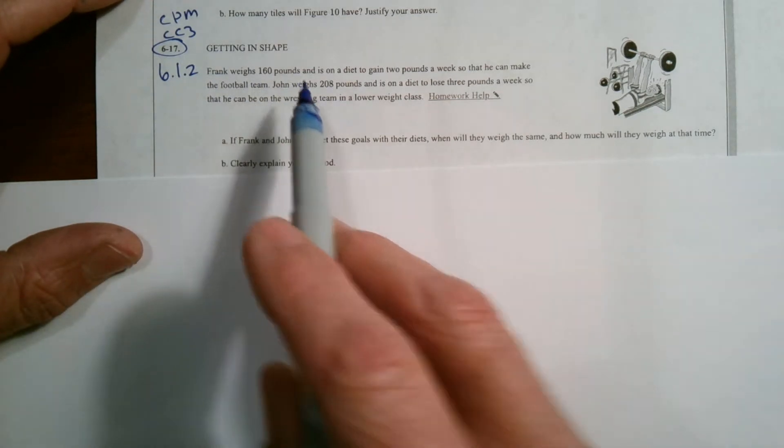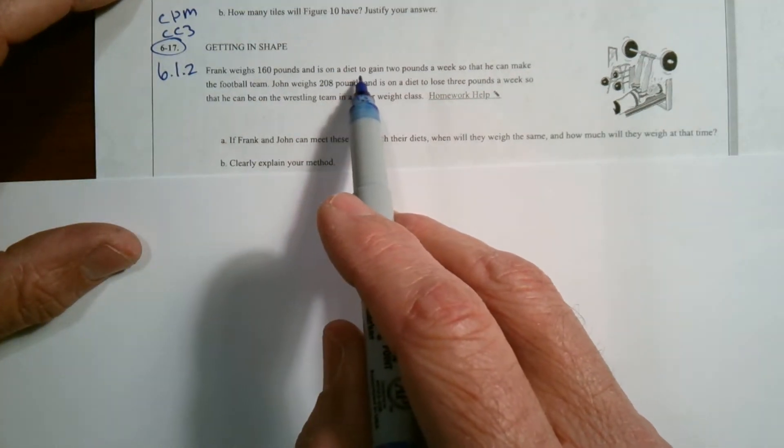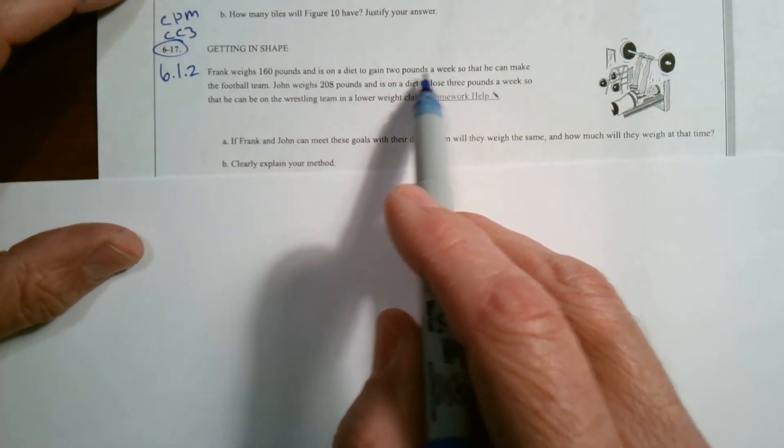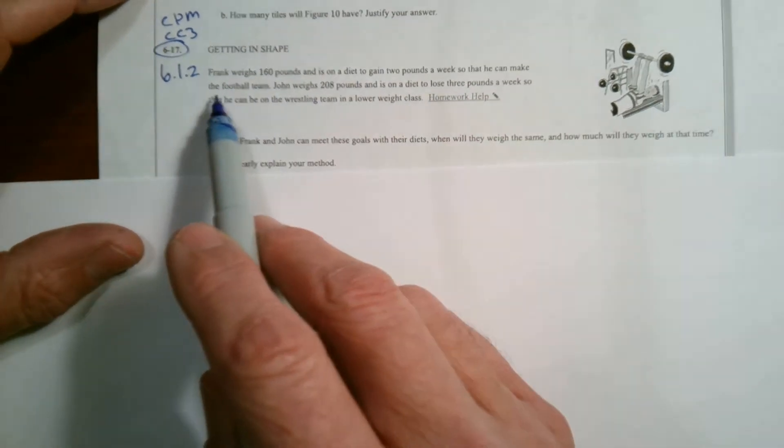So Frank weighs 160 pounds and is on a diet to gain two pounds a week so that he can make the football team.